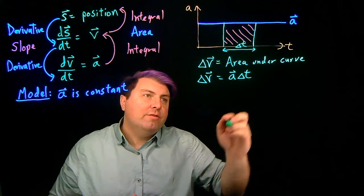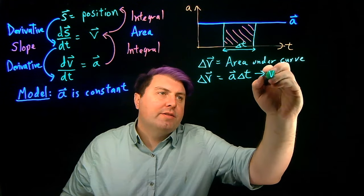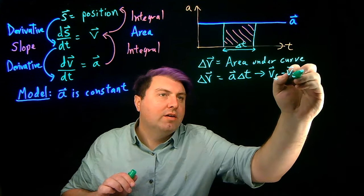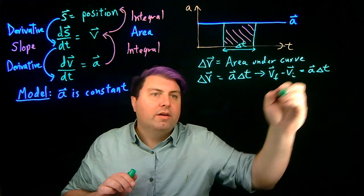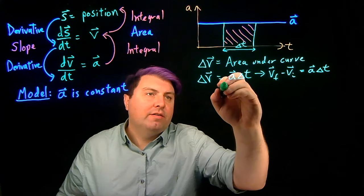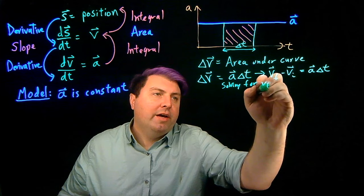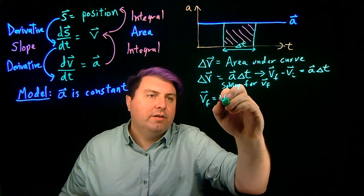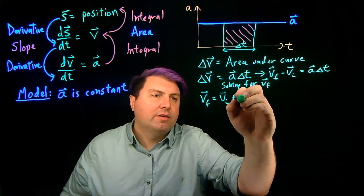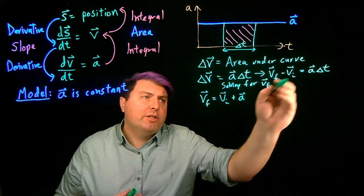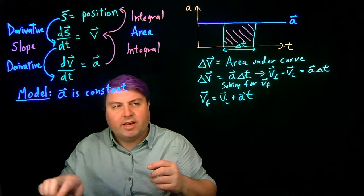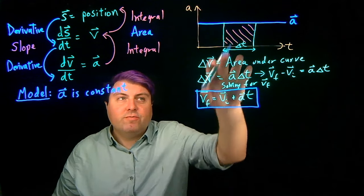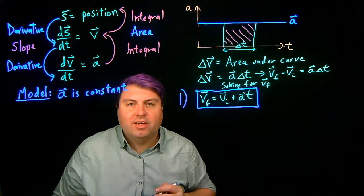We can write delta v as the final velocity minus the initial velocity, so delta v equals a times delta t. Solving for vf, we get vf equals vi plus a times t — and for these equations we use t rather than delta t. This is kinematic equation number one.